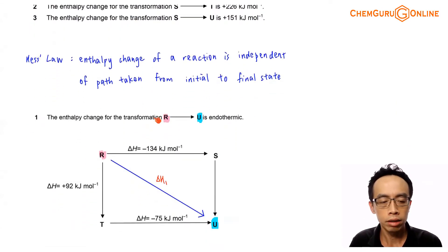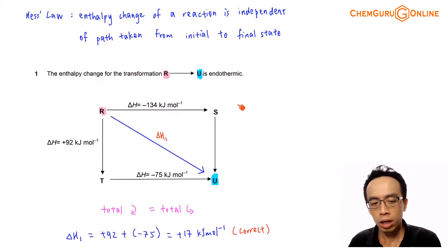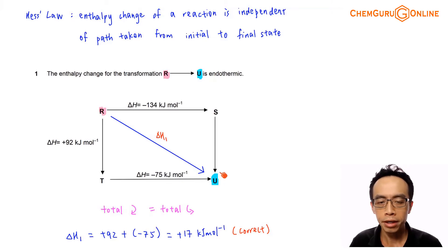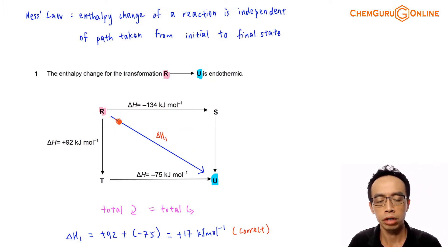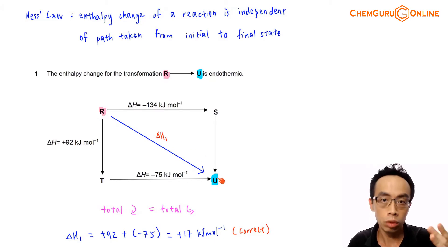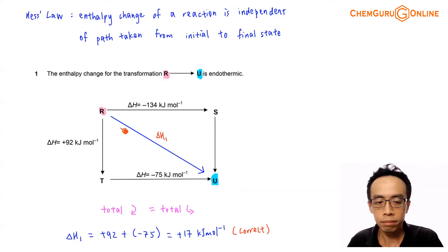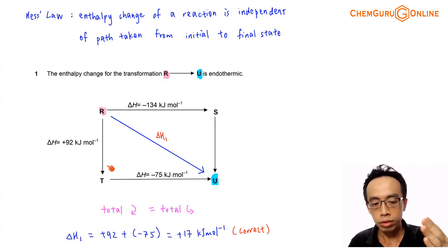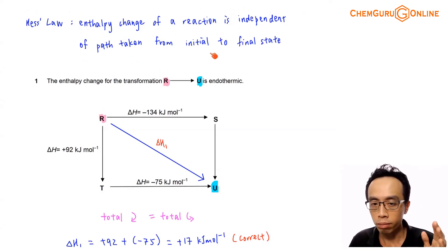Let's look at statement one: the enthalpy change for the transformation R to U is endothermic. R is here, U is here. The direct path involving the enthalpy change from R to U is shown as enthalpy change for reaction number one. Hess's law states that the enthalpy change involving this reaction from R to U is the same if we go by a different path — we can go R to T, then T to U. Ultimately the reactant is still R and the product is still U.